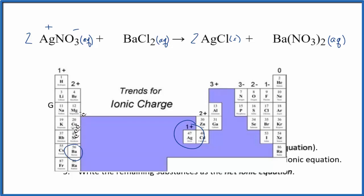Barium, right here in group 2, has a 2+ ionic charge. Chlorine, one of the halogens, has a 1- ionic charge. So we have our charges and can now split things up in the reactants.